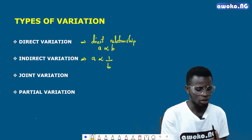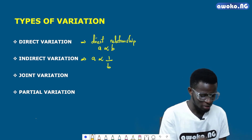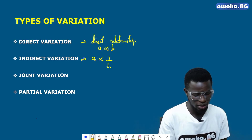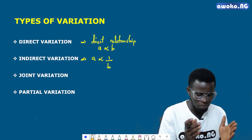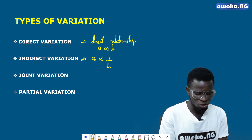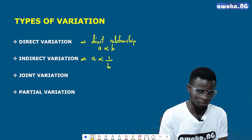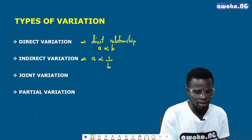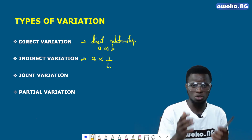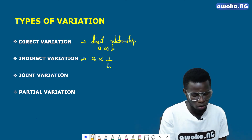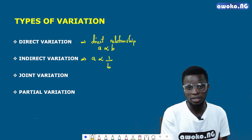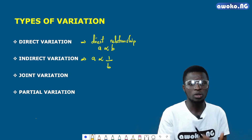The last type is partial variation. Partial variation implies that the variables depend on another variable such that one independent variable remains the same always, and the other changes. There is a particular factor that drives the change according to the quantity of the independent variable being used. All these types will be broken down in detail in our subsequent class.